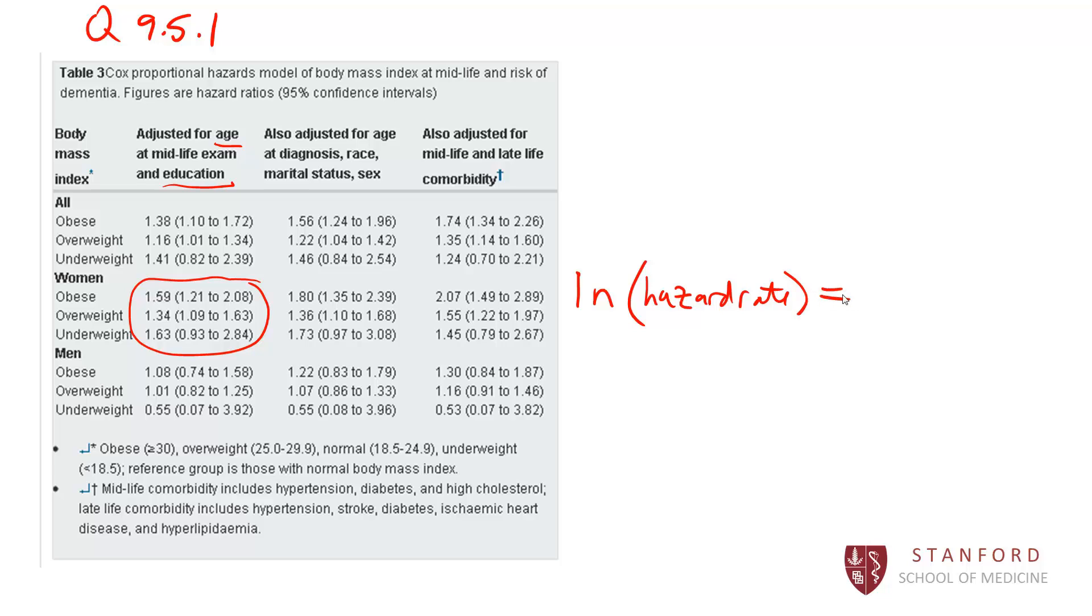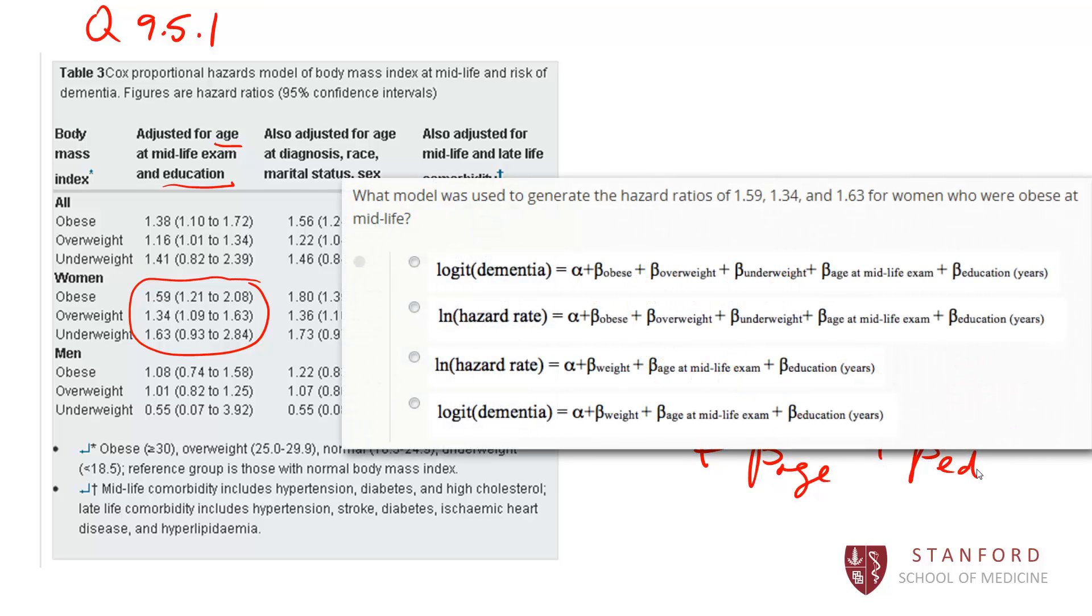So you know that your natural log of your hazard rate here is going to be equal to, we're going to have an intercept plus we have to have a beta for obese, plus a beta for overweight, plus a beta for underweight. And plus we have to also, we're adjusting for age and for education, which are continuous variables. So we'd have the dummy coded variable. It's a four level categorical variable, so we need three binary variables in the model to represent that. Plus we're adjusting for age and education. So the correct answer here would be B.